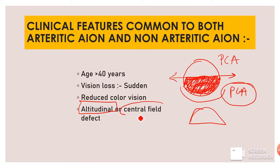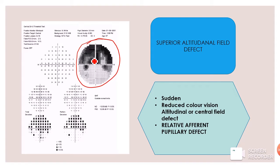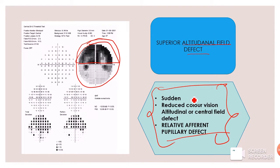This picture shows a superior altitudinal field defect, also called superior altitudinal field defect. To summarize, the common features of both arteritic and non-arteritic AION are: sudden vision loss; reduced color vision; altitudinal or central field effect; and relative afferent pupillary defect.